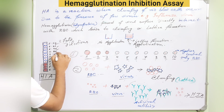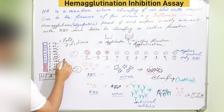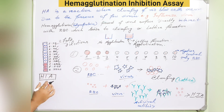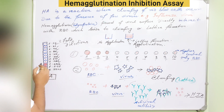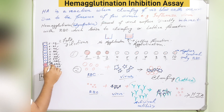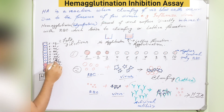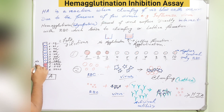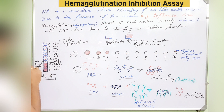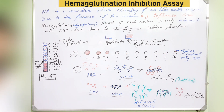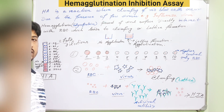Using two-fold dilutions — 1:10, 1:20, 1:40, 1:80, 1:160, 1:320, 1:640, 1:1280 — all three components (RBCs, virus, and diluted serum) are present in each well. Up to tube eight, there is no hemagglutination observed. The highest dilution showing no hemagglutination is tube eight at a dilution of 1:1280.